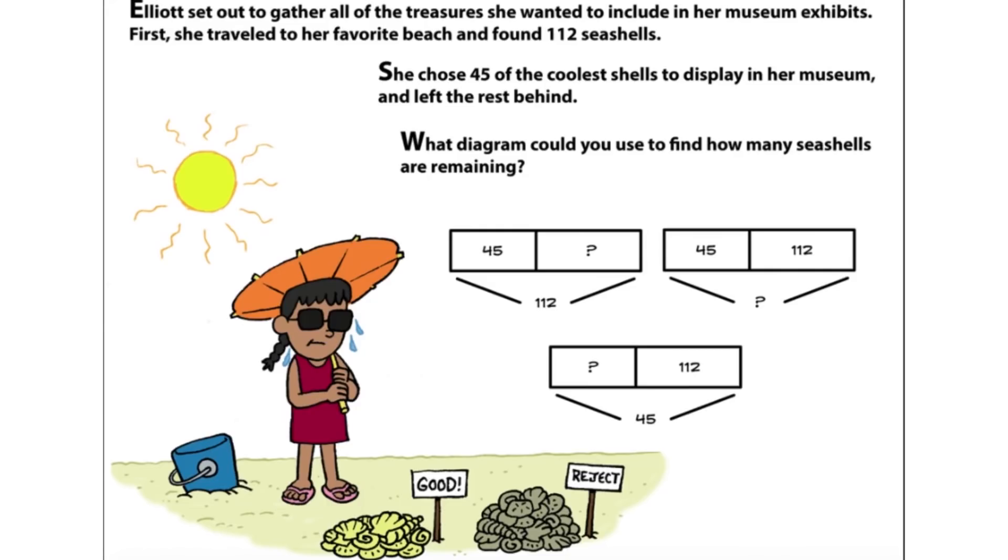Elliott set out to gather all of the treasures she wanted to include in her museum exhibits. First, she traveled to her favorite beach and found 112 seashells. She chose 45 of the coolest shells to display in her museum and left the rest behind. What diagram could you use to find how many seashells are remaining?